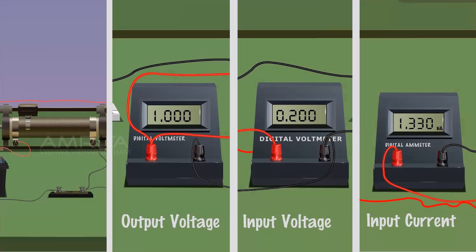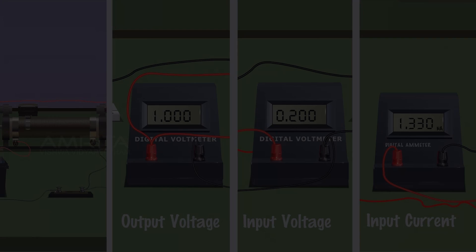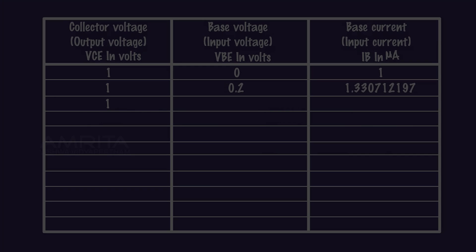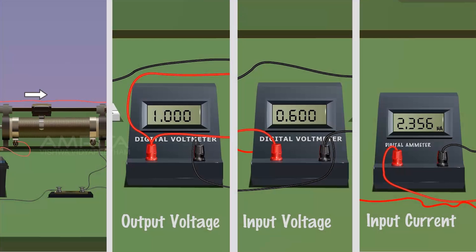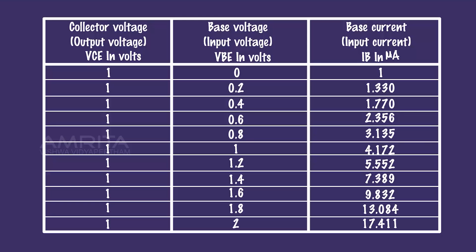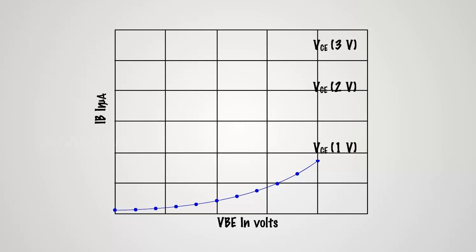Note the base voltage VBE and base current IB. Record the values in a tabular column. Increase the base voltage using the rheostat RH1. Note the base voltage VBE and base current IB. Record the values in a tabular column. Repeat the experiment by again increasing the base voltage. Plot a graph between base voltage VBE along the x-axis and base current IB along the y-axis for the constant collector voltage.